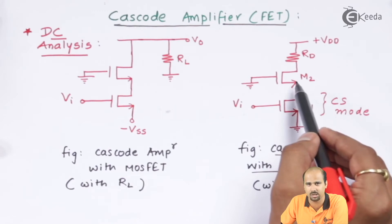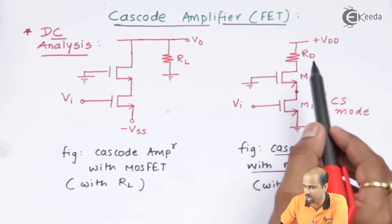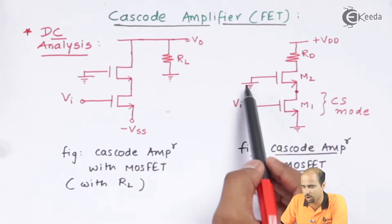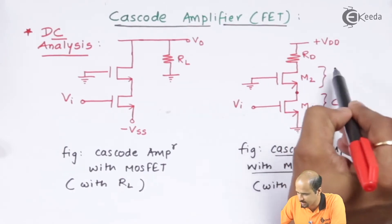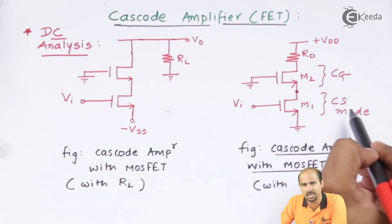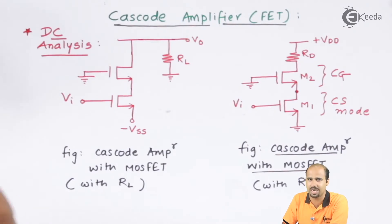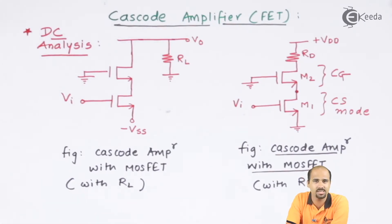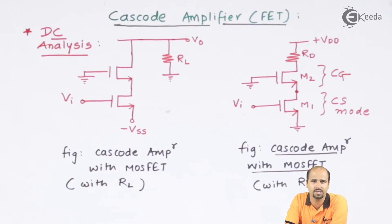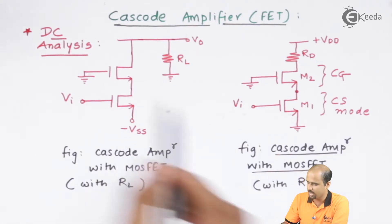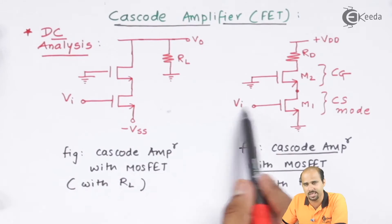The drain terminal acts as an output, and that output is given as input to the second transistor, which is acting as a common gate configuration. So this is called the CSCG mode — a multi-stage CSCG amplifier. In an exam, they may ask you what a CSCG amplifier is; don't get confused — it is nothing but the cascode amplifier using FET transistors.